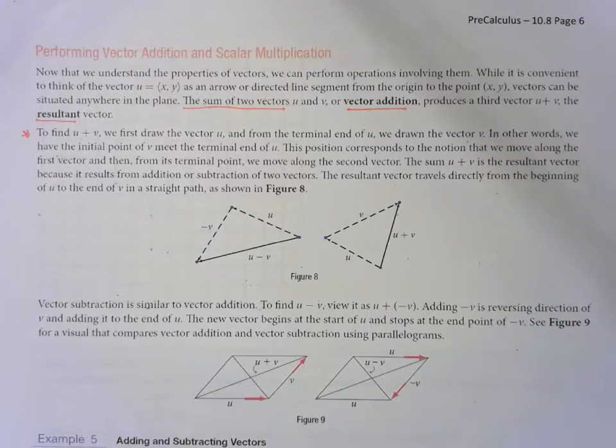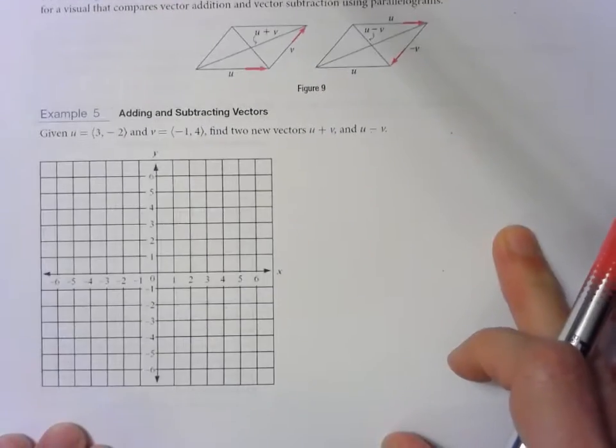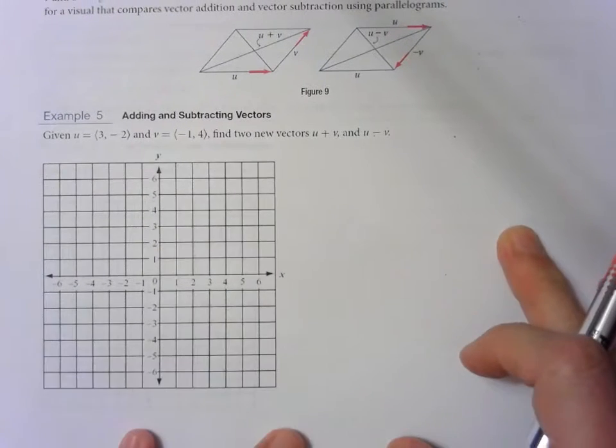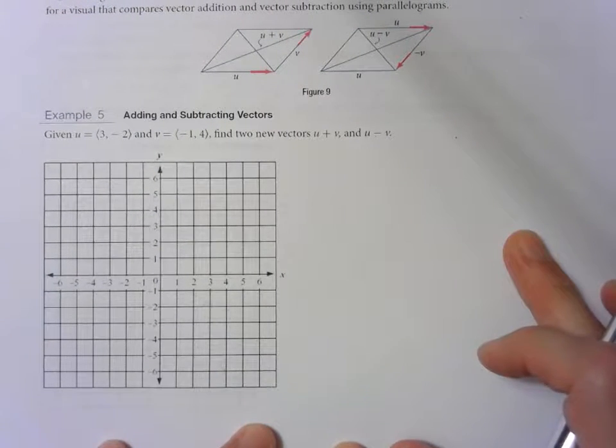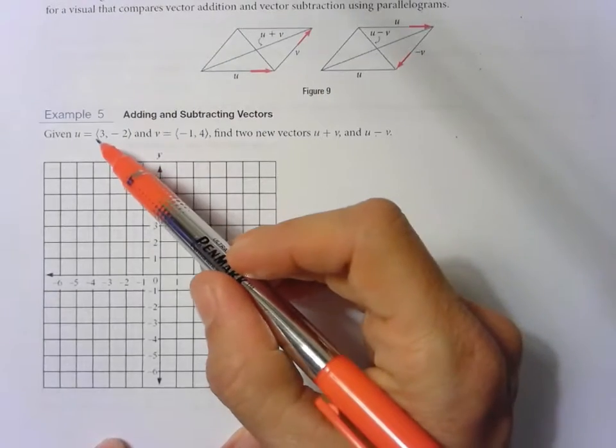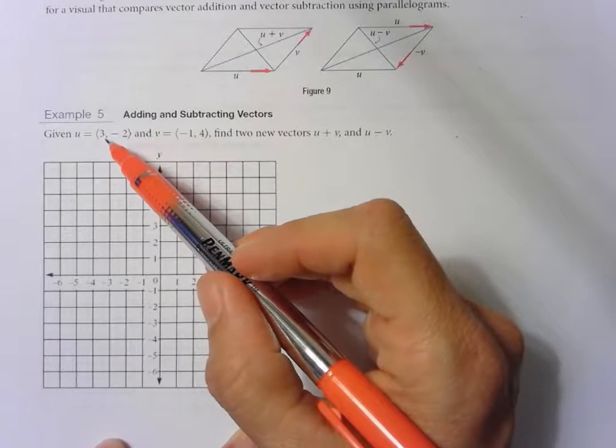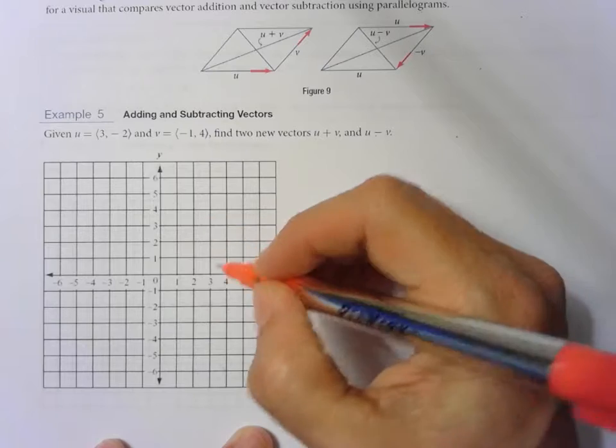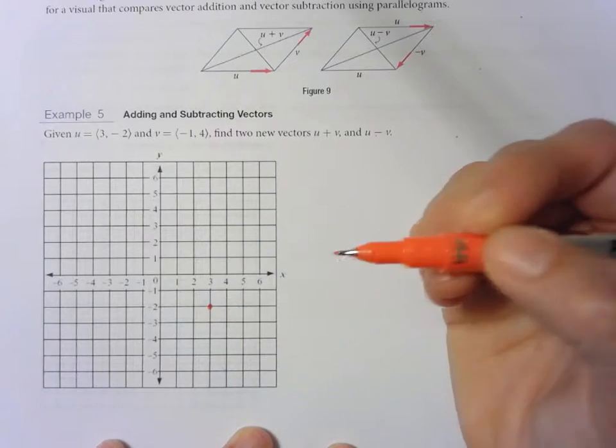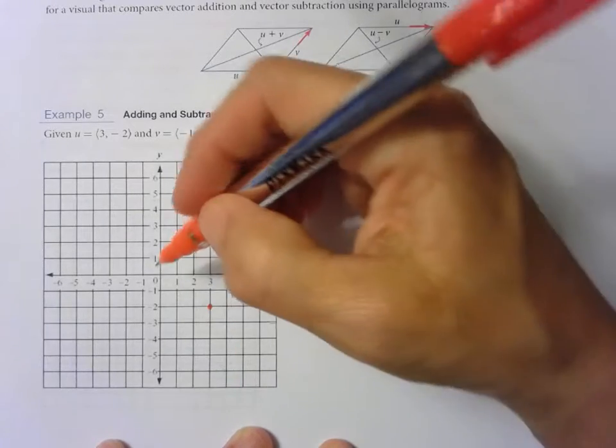Let's try that before we do anything else. I want to draw a picture so you can see what's happening, then I'll show you the math behind it. We draw the vector u, which is <3, -2>. We draw this vector.